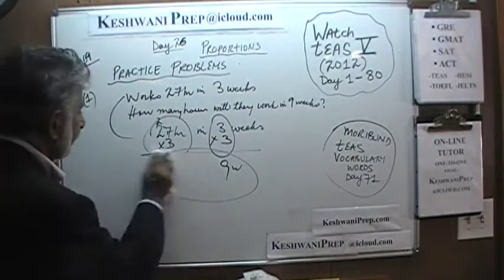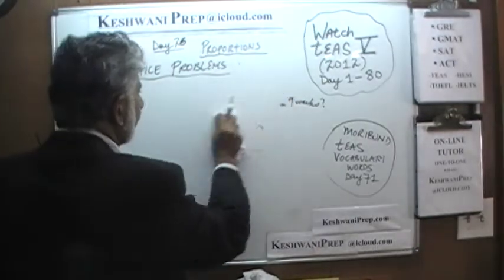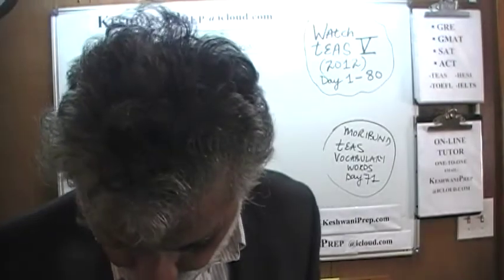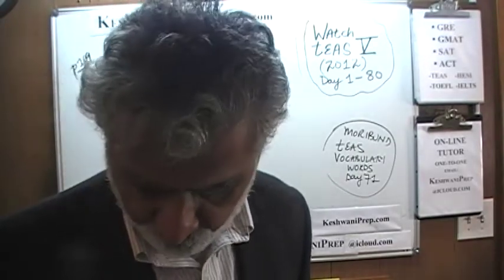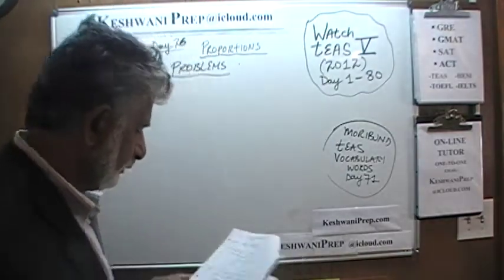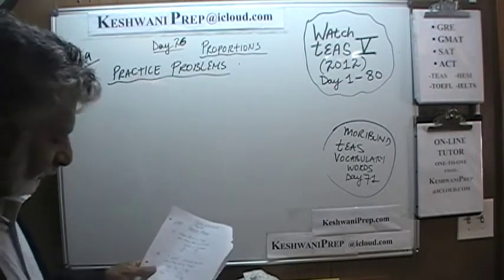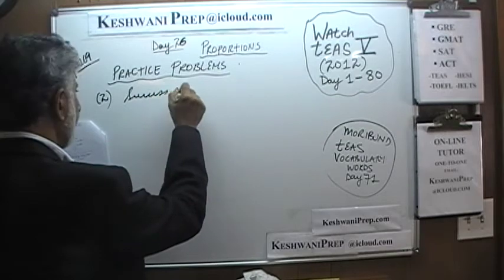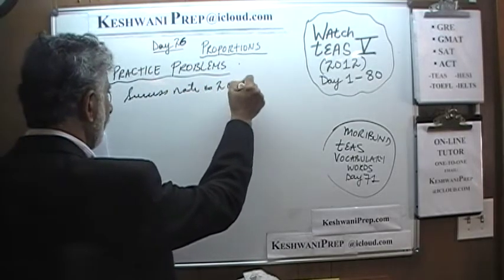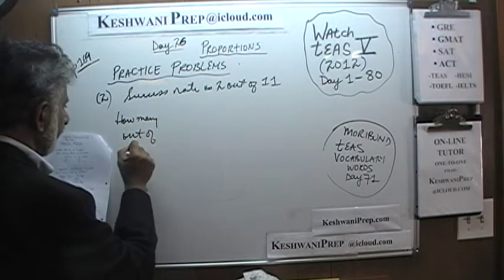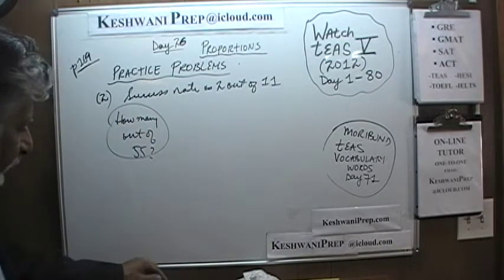Let's take a look at number 2. Apparently we are making some sales calls. It says the success rate for a salesperson is 2 out of 11. For every 11 calls he makes, he manages to find 2 suckers. The question is, at this rate, how many successes will he have out of 55 calls? The success rate is 2 out of 11. The question is, how many out of 55? How many successes can we expect out of 55?